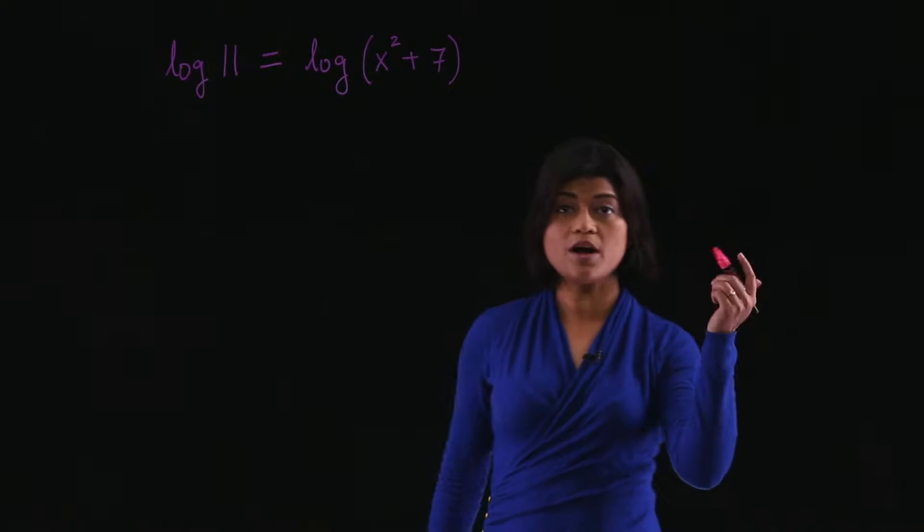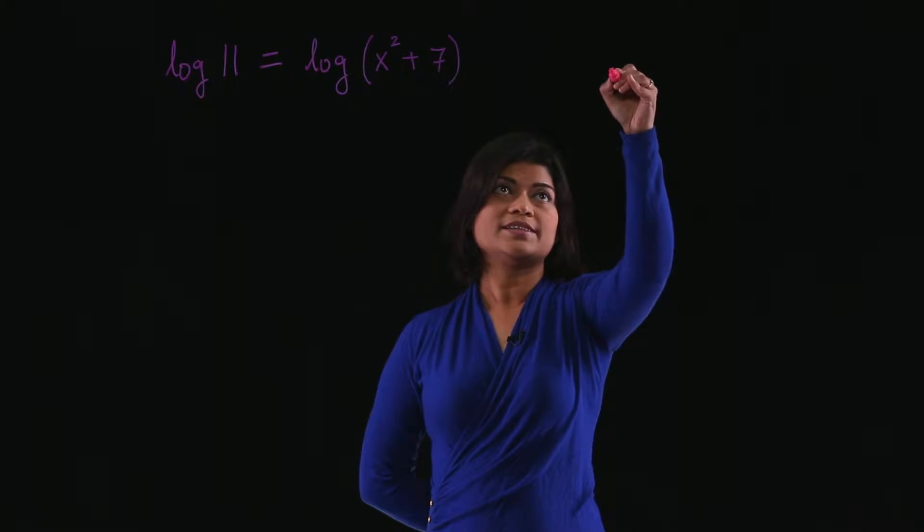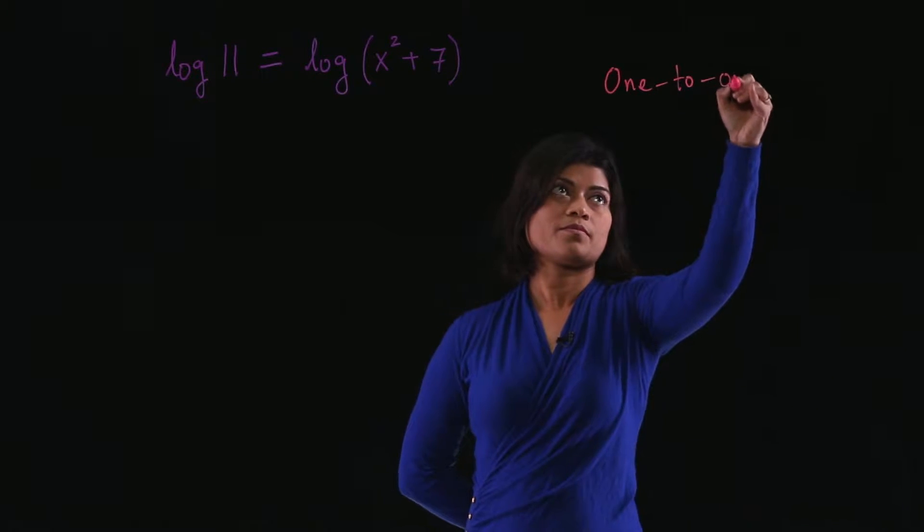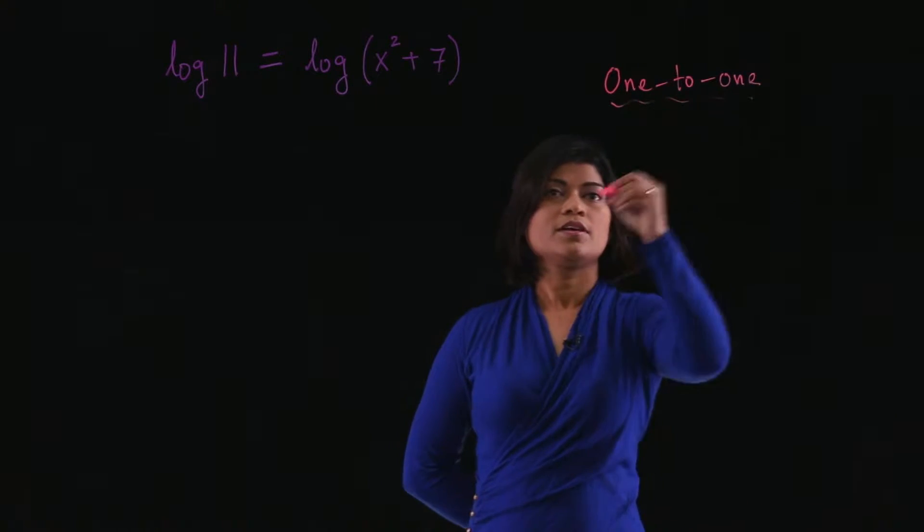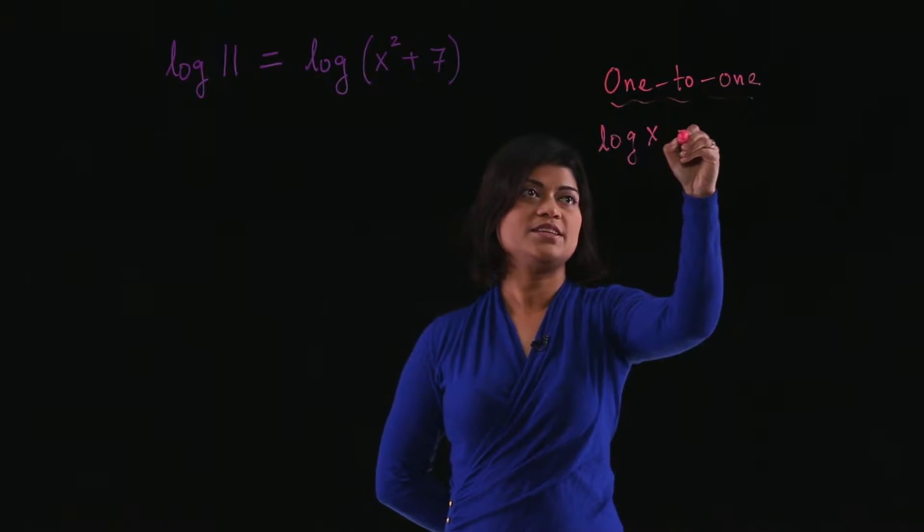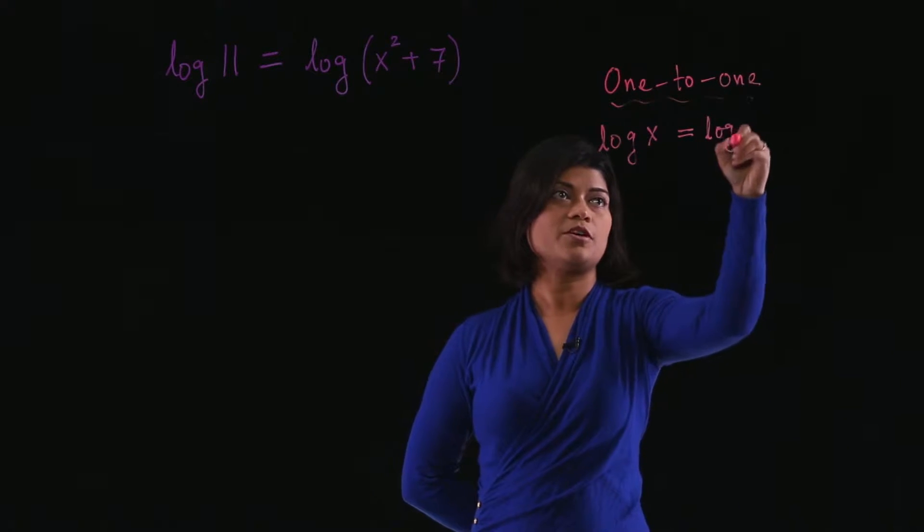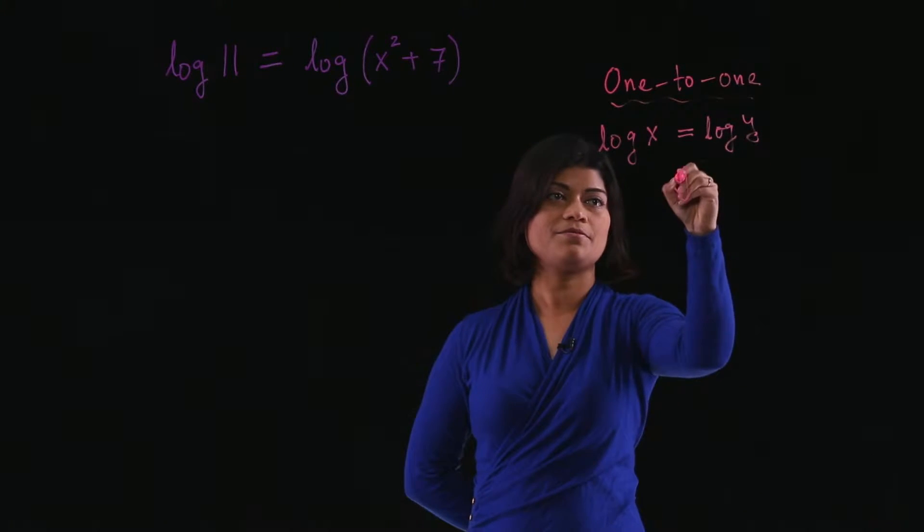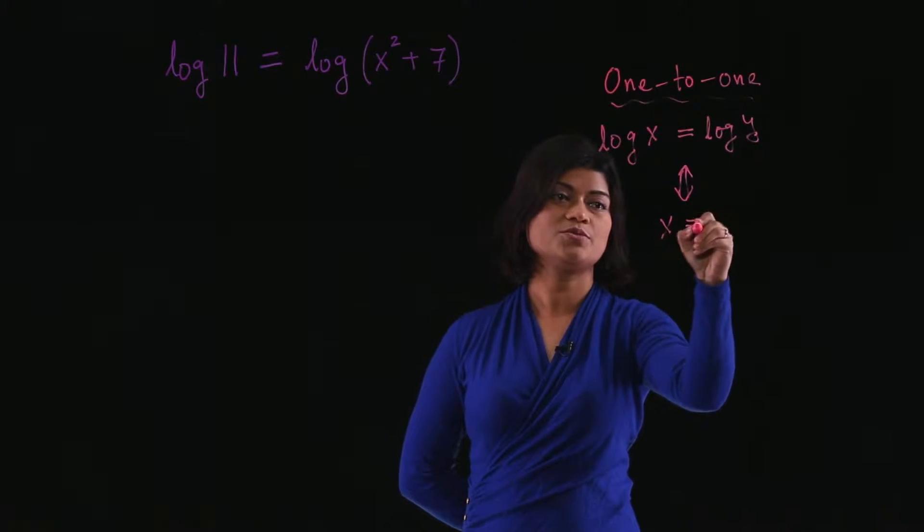Recall the one-to-one property. It says that if you have logarithm of x equals logarithm of y with the same base, that's if and only if x equals y.